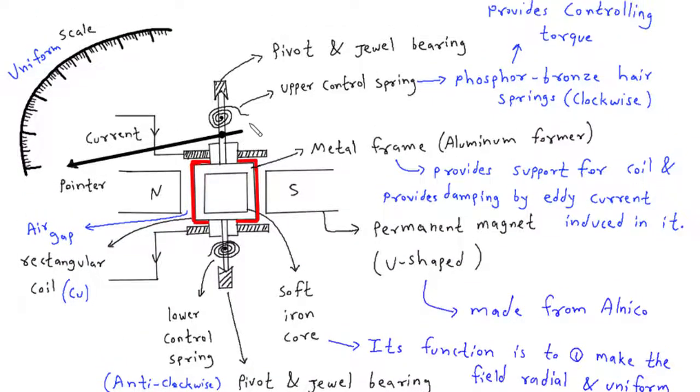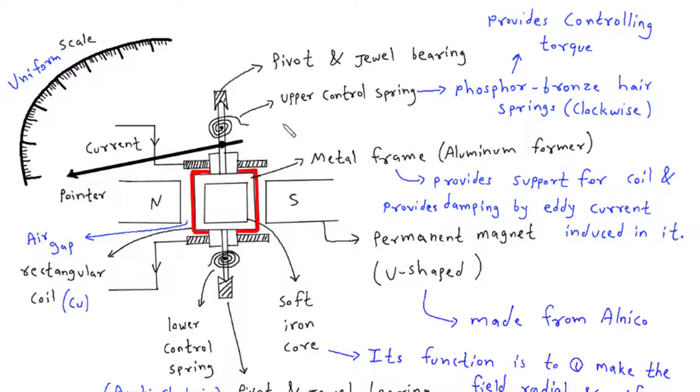The PMMC meter is a marvel of precision engineering, allowing us to measure electrical current with accuracy and reliability. Its design encompasses a careful arrangement of components that work together seamlessly to provide us with valuable current readings.